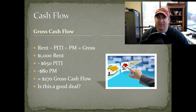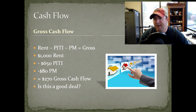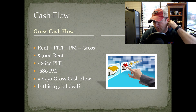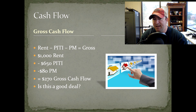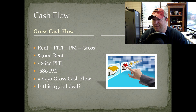When you're looking at cash flow, there's what's also considered gross cash flow. My formula is rent minus PITI — which stands for principal, interest, taxes, insurance, otherwise your mortgage payment — minus PM for property management, equals your gross monthly cash flow. So if you have $1,000 in rent, subtract $650 for the mortgage payment, minus $80 in property management fees at 8%, you're left with $270 a month in gross cash flow. Is that good? It depends on your criteria.